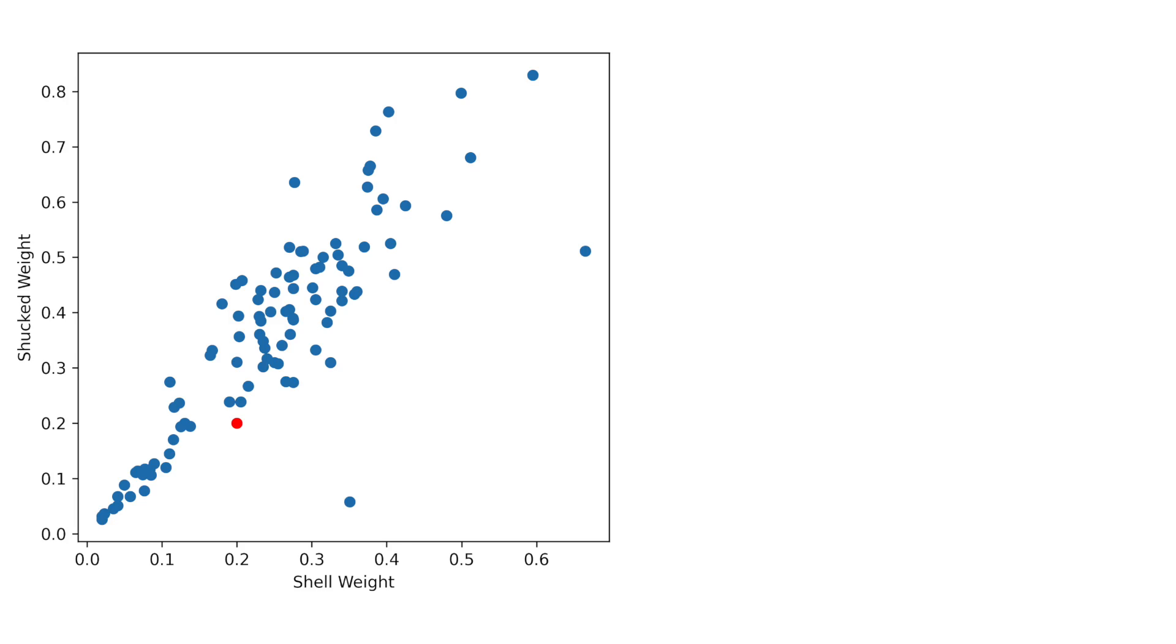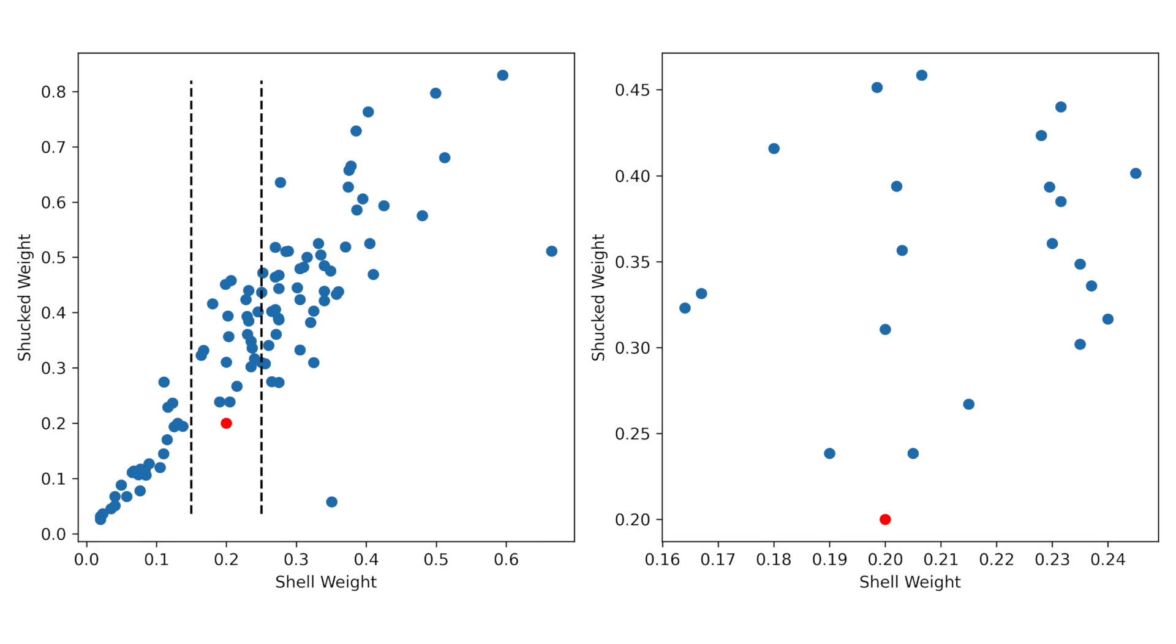The key to this problem is the range. Correlations can only be calculated using the entire range of both features. If we only look at the instances within a small interval, then the correlation is meaningless. Yet we have created an interval around the red instance by only considering instances with shell weight between 1.5 and 2.5. The plot on the right shows that in this interval the correlation is not as obvious. A smaller interval would make it even less obvious.